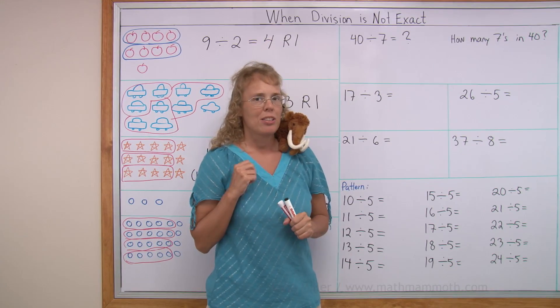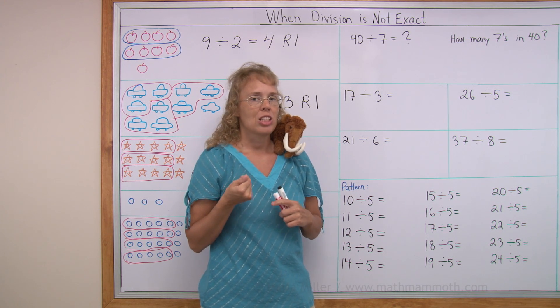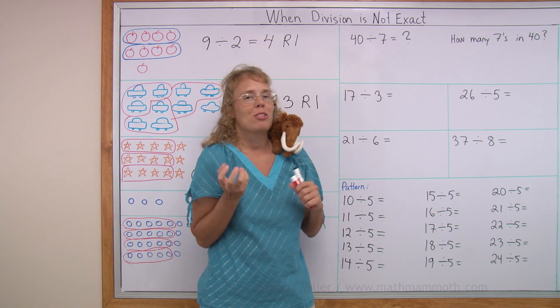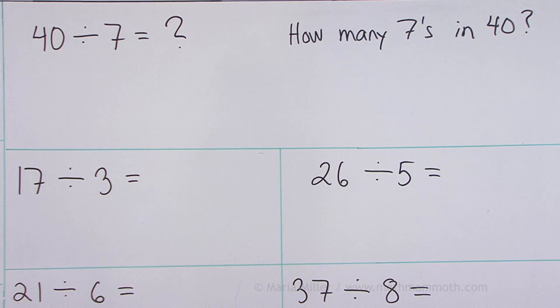Now let's think about the method to find the remainder and to find the answer for division when it's not an even division so that we don't have to just draw things. Forty divided by seven. Think this way. How many sevens are in forty? And then use multiplication.